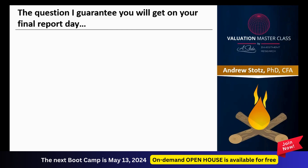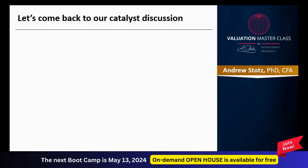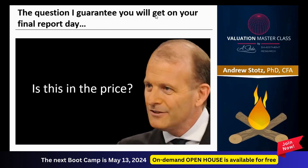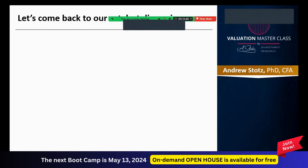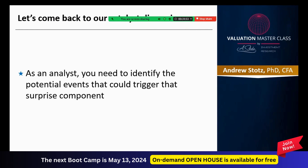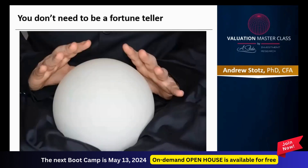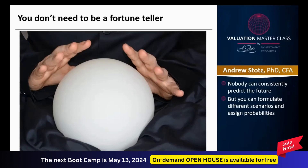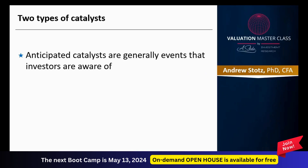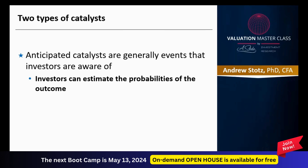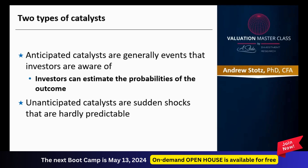The question that I guarantee you're going to get on your final report day when you're presenting is: 'Is this in the price?' As an analyst, you need to identify the potential events that could trigger that surprise component — the catalyst that could move the share price. You don't need to be a fortune teller; nobody can consistently predict the future, but you can formulate different scenarios and assign probabilities. There are two types: anticipated catalysts, which are related to things we know are coming, and unanticipated catalysts, which are sudden shocks that are barely predictable.